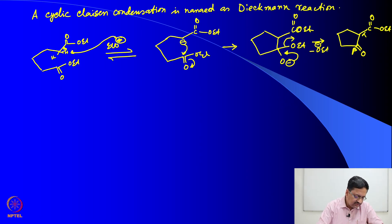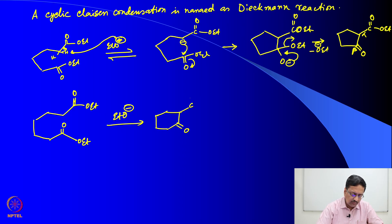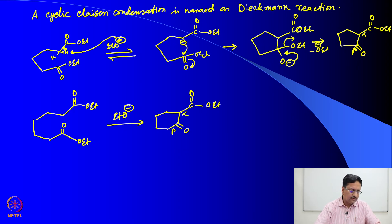When the double bond forms back, OEt is eliminated and you get a cyclic beta-keto ester. Similarly, if we do this reaction on a long chain molecule, you can form a six-membered ring very efficiently containing both the keto and ester functionality. This cyclic reaction is very useful in synthesizing cyclic compounds. The ester groups are essential at two ends for this reaction to proceed efficiently.